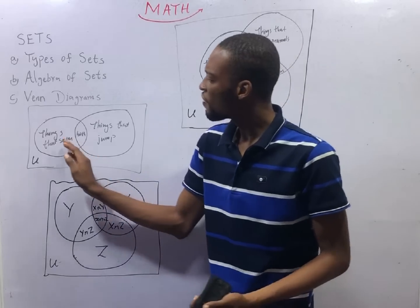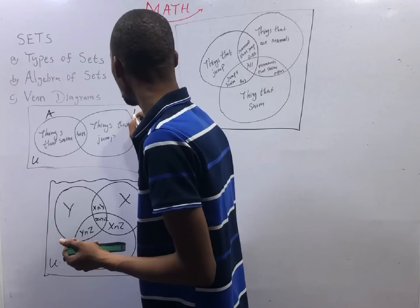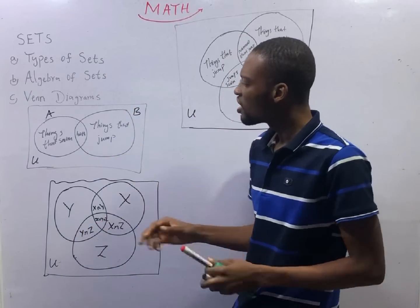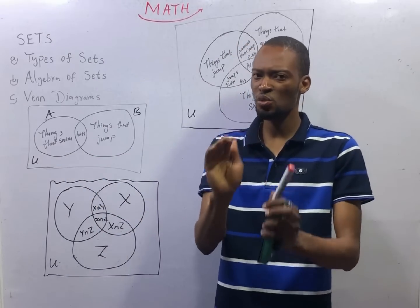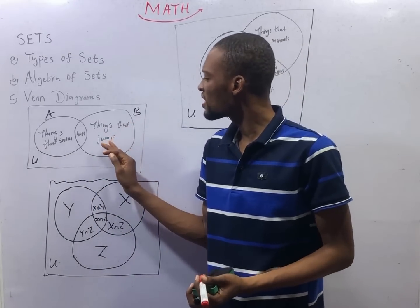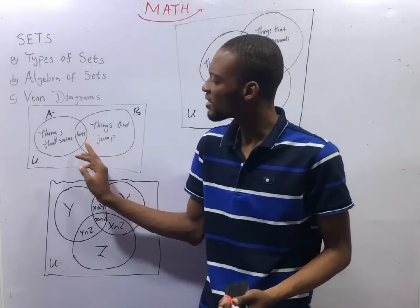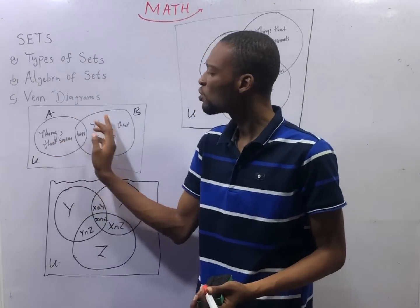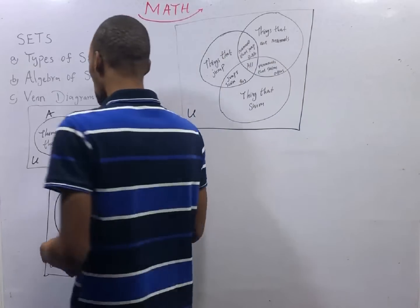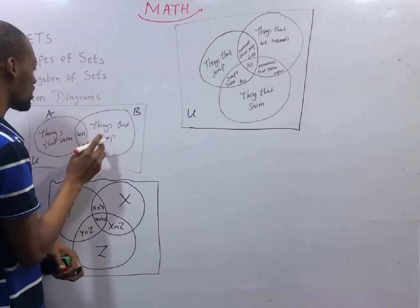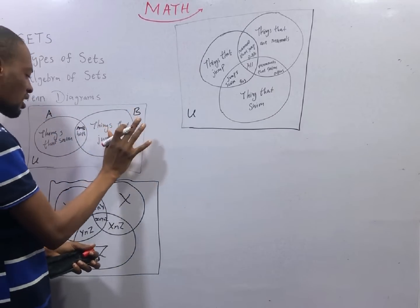For 2 sets, the first part of the set, let's call this set A, and let's call this set B. If set A represents things that swim, and set B represents things that jump, this part here will represent things that swim and also jump. This is A intersection B. We can call here set A, set B, A intersection B - what is common between A and B.